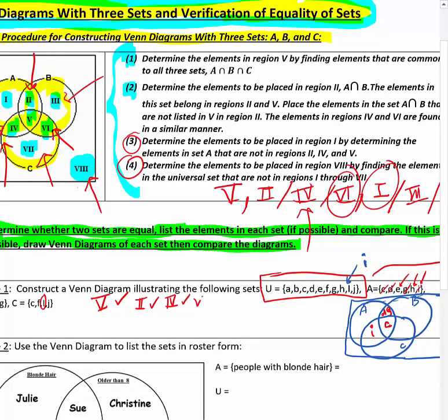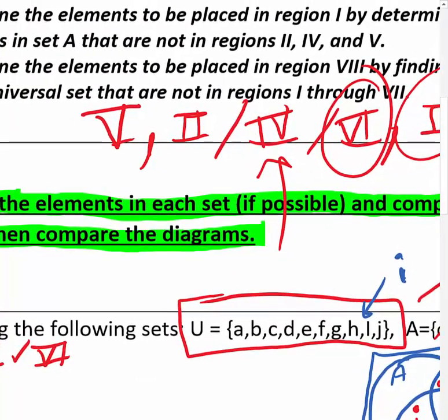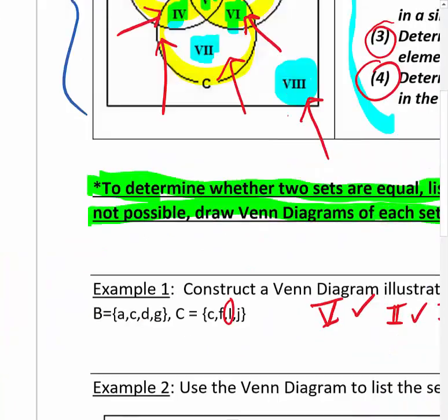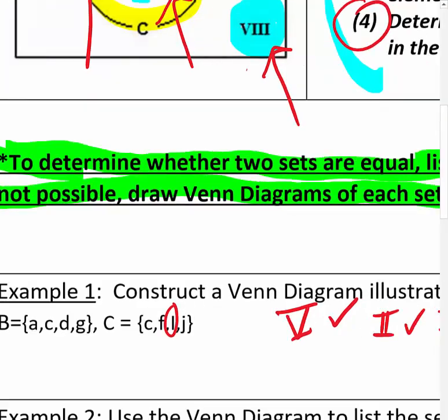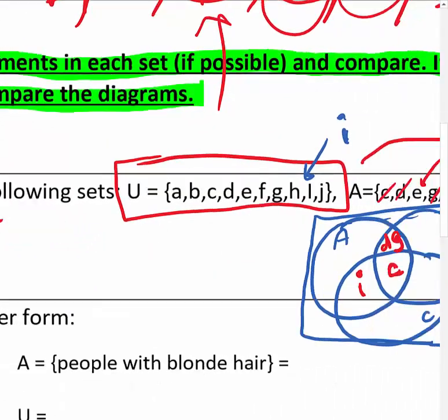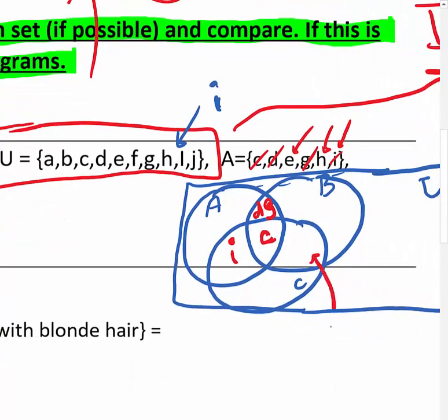Next is area six — the area shared by C and B. Looking at sets B and C, do they have anything in common besides the letter C already placed? Set B has A, C, D, and G. None of those are new matches with set C. So area six is going to be empty — there's nothing that B and C share exclusively.